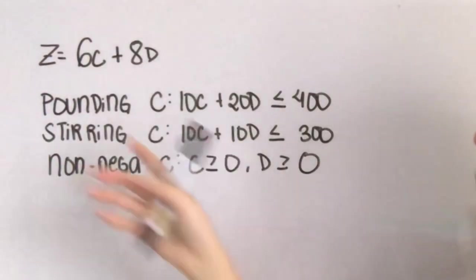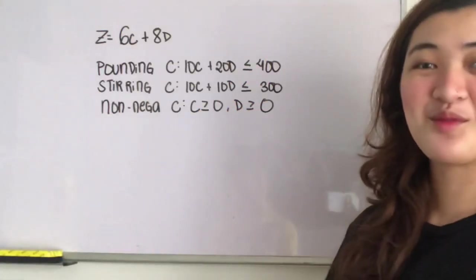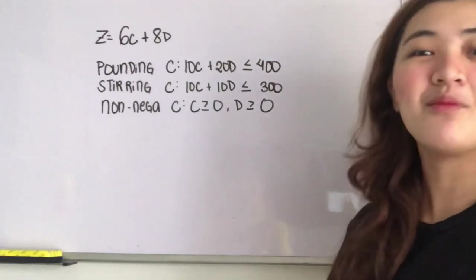Again, these three are the constraints. Next, we will graph the constraints. Please look at this as we look at this graph in the plane. Let C be the x-axis, D be the y-axis. The following is the pounding constraints.